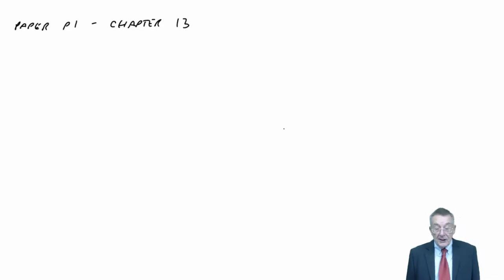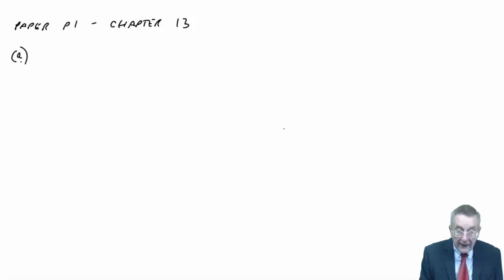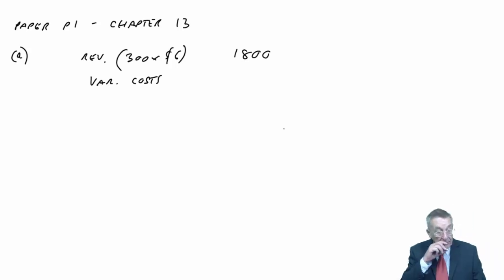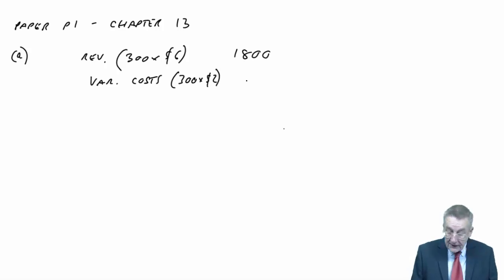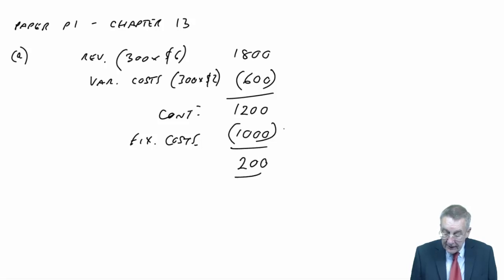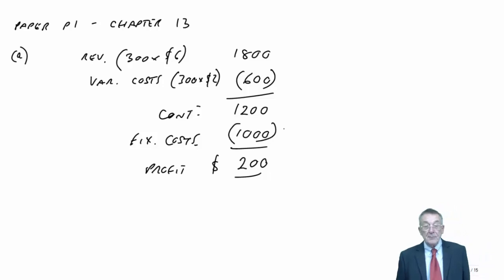If we're selling 300 units, the budgeted revenue is 300 units at $6, which is $1,800. The variable costs, 300 units at $2 a unit, is $600, so the contribution is $1,200. Subtract the fixed costs of $1,000, and the budgeted profit is $200.